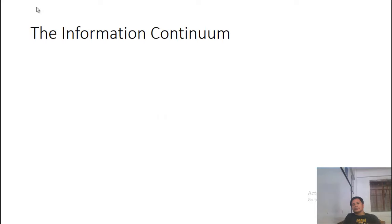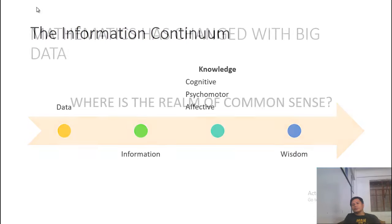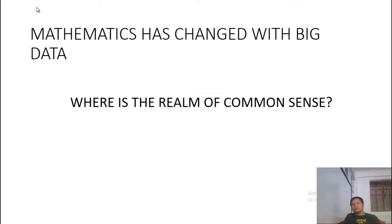The information continuum. This is in the context of information processing, the subdomain on the practical field of mathematics. It starts with data. The data when processed becomes information, and this information when used in application becomes knowledge. And when this knowledge is used in propriety and humanistic benevolence, becomes wisdom.